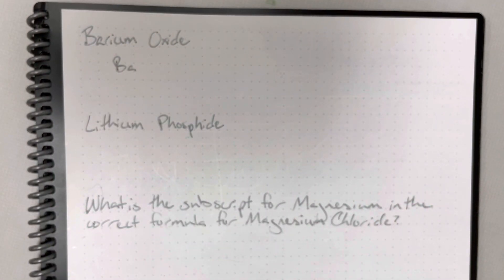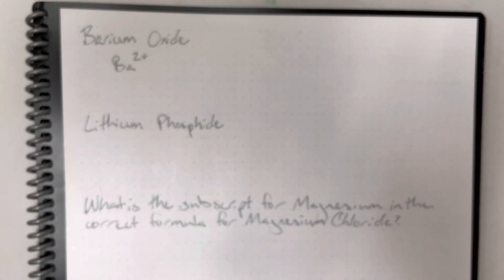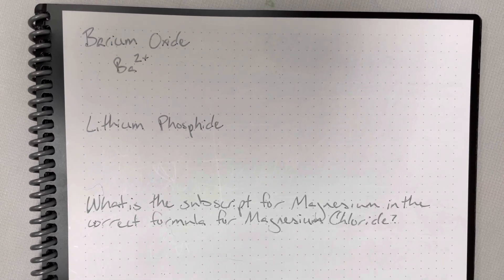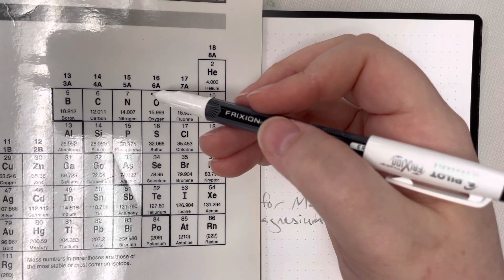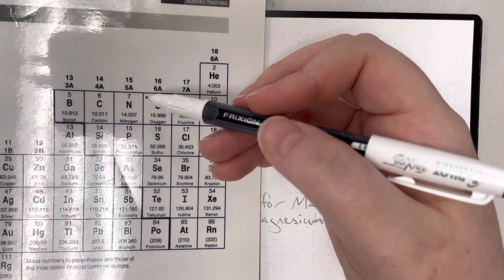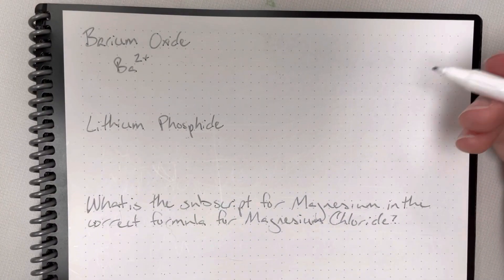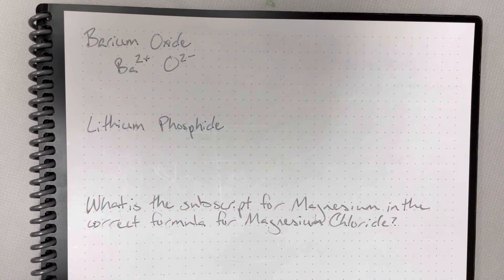Being in column 2 means barium has two valence electrons. It is going to give those two valence electrons away — giving a gift is a nice thing to do — so barium is going to have a positive 2 charge. Oxide is secretly oxygen. Oxygen's symbol is O and it is in column 6, which means it has six valence electrons. It wants eight, so it's going to steal 2. Stealing is bad, so oxygen is going to have a negative 2 charge.